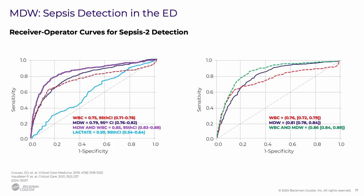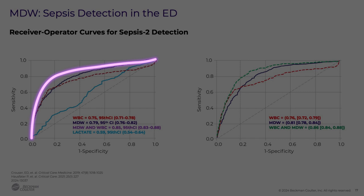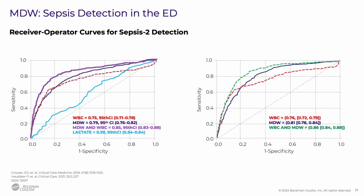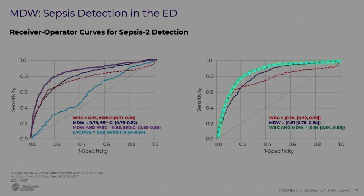The predictive value of MDW is enhanced when combined with white blood cell count results. These charts, known as ROC curves, compare the diagnostic ability of several common infection markers. A perfect diagnostic tool would have a score of 1, and the higher the curve, the better its performance. The ROC curve on the left is based on data from the US pivotal trial. The thick purple line represents the diagnostic ability of combining MDW and abnormal white blood cell count, which was superior to white blood cell count alone, MDW alone, and lactate. The ROC curve on the right is based on clinical data from the European pivotal trial, and the green dashed line represents combining MDW and white blood cell count, which again was found to be superior to MDW or white blood cell count alone.